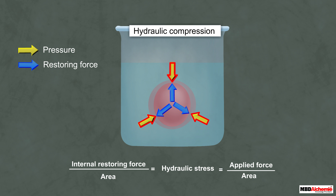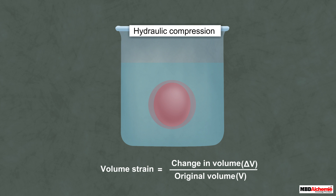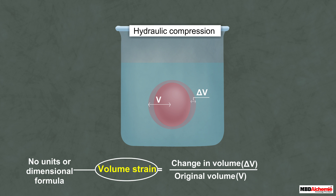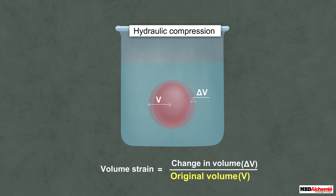The strain produced in this case is called volume strain, expressed as the ratio of the change in volume ΔV to the original volume V. Strain has no units or dimensional formula because it is the ratio of the change in dimension to the original dimension.